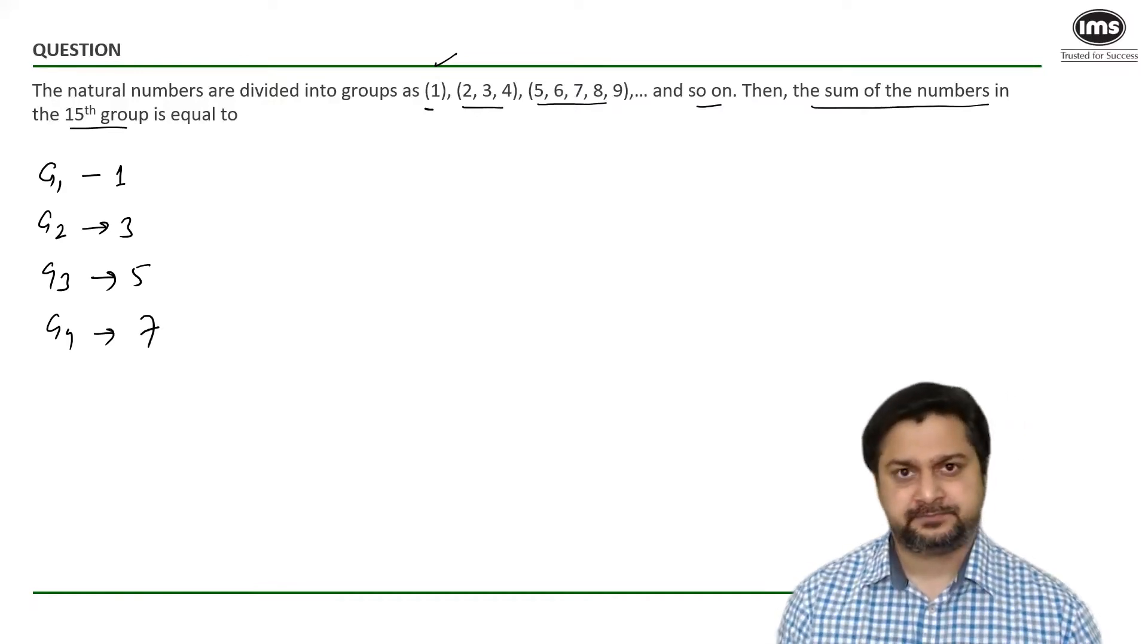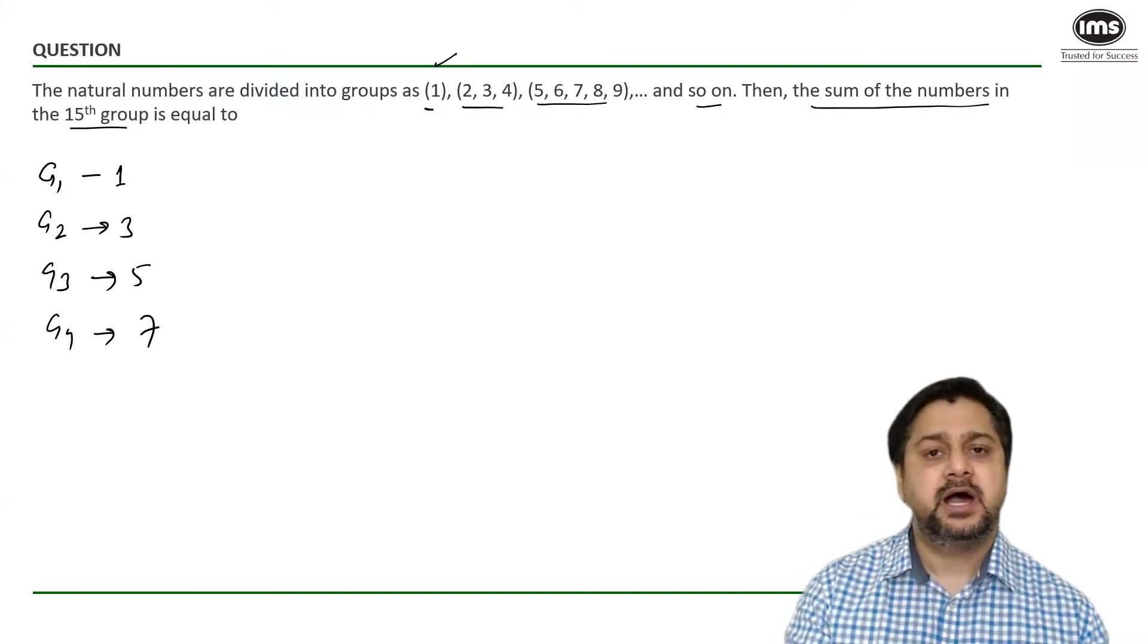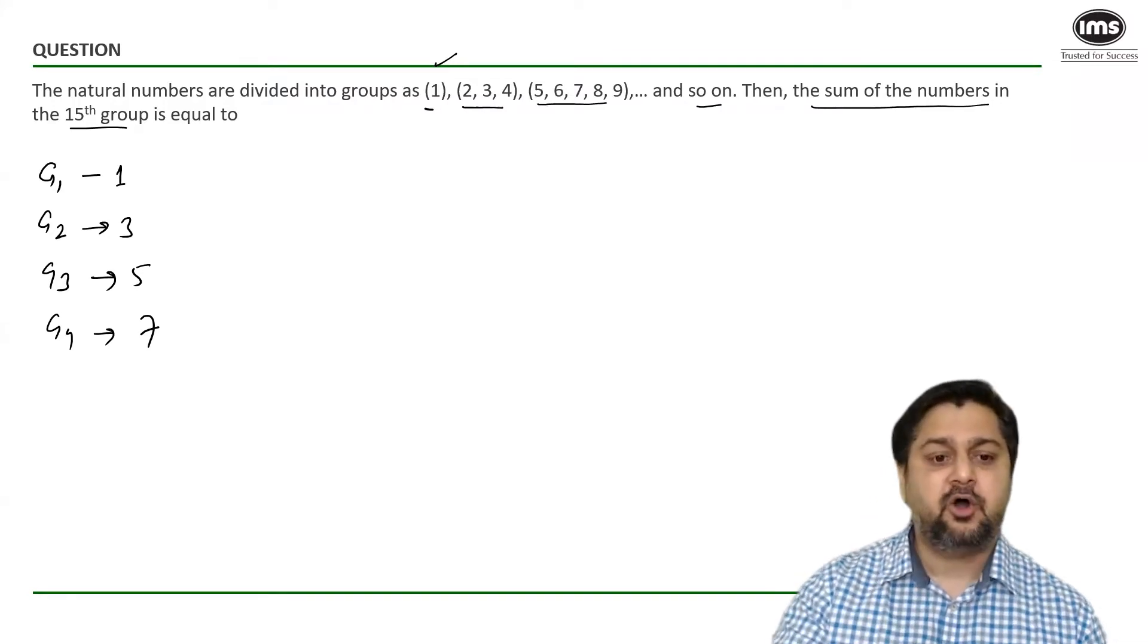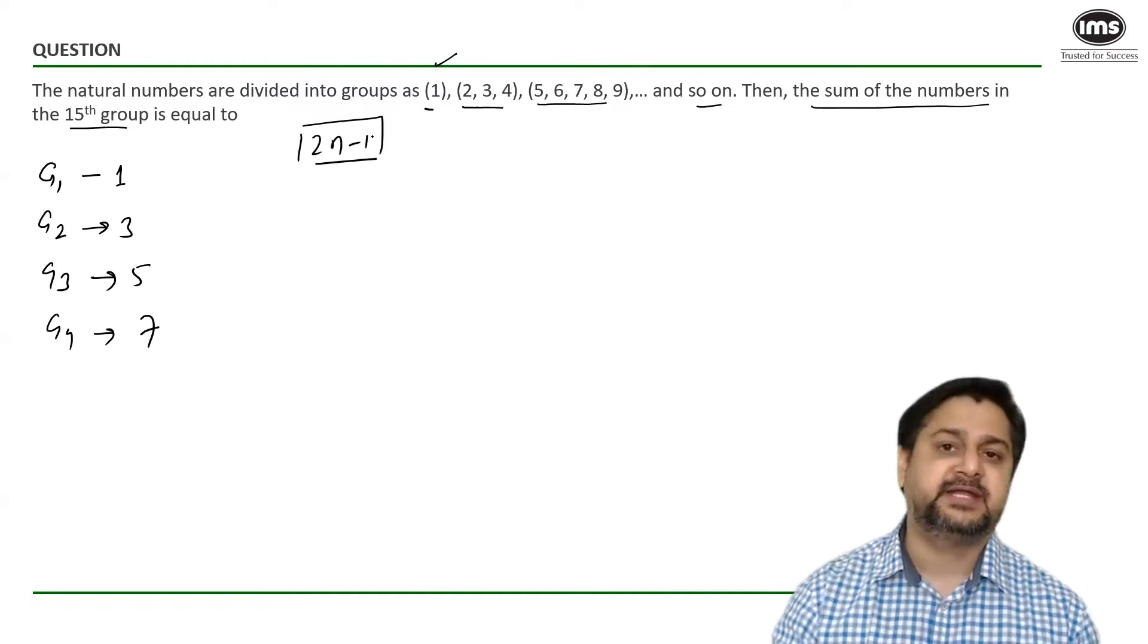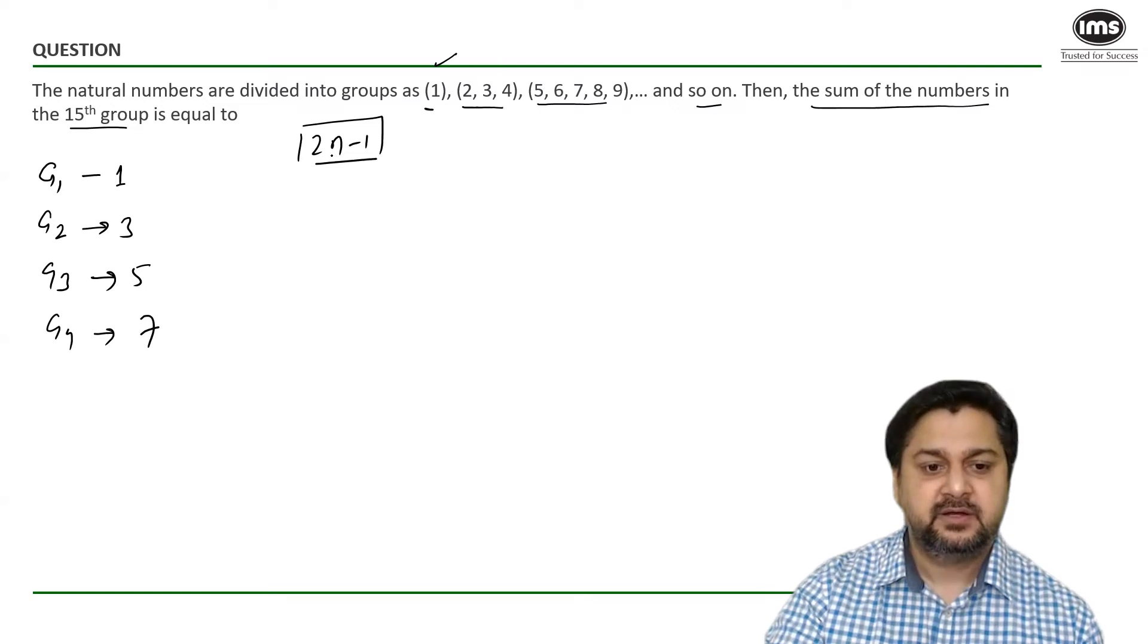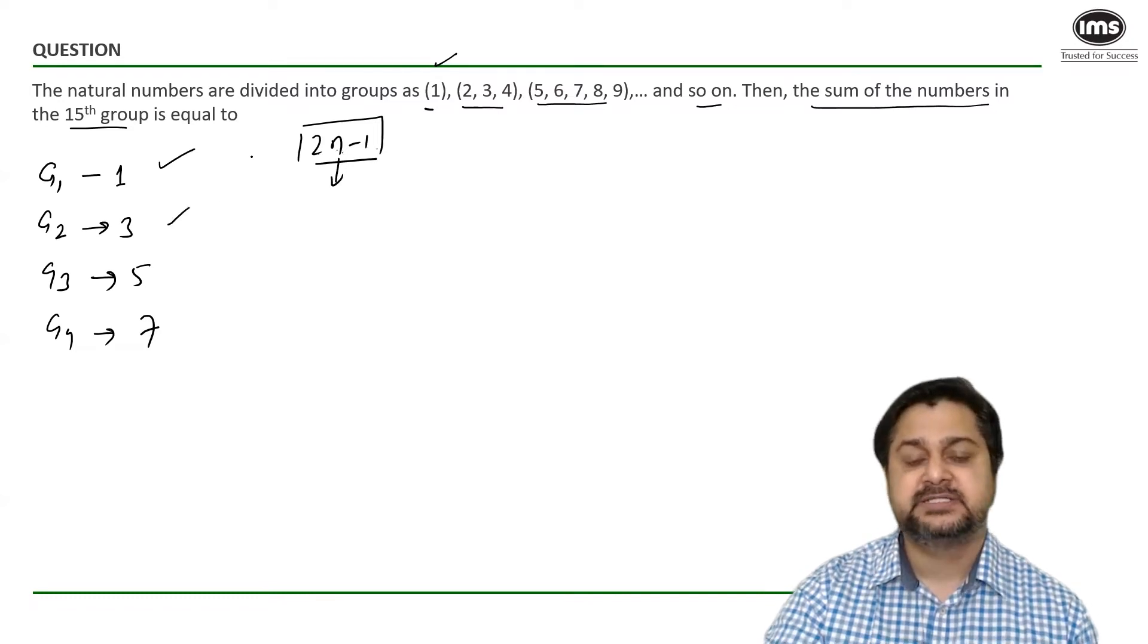So what I get to know from here is that the number of elements in every group are odd, and odd natural numbers can be represented by 2n minus 1. So the first group had 2 into 1 minus 1, one element. The second group has 2 into 2 minus 1, 3 elements, and so on.